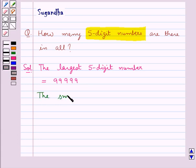Now, the smallest 5-digit number is equal to 10,000.